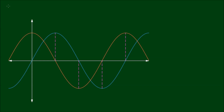In this video we're going to prove that the derivative of sine of x is equal to cosine of x. We're going to resort to first principles, or the definition of the derivative, to help us do this. But before we do, let's revise the graphs of sine x and cosine of x.